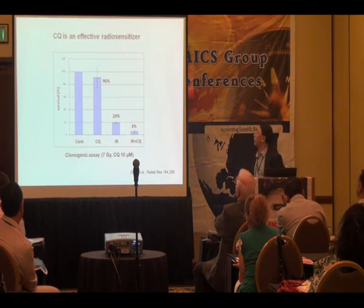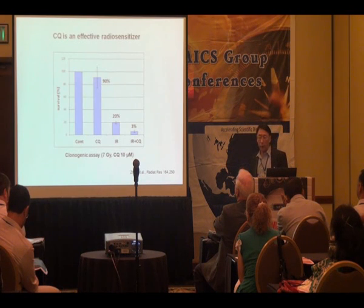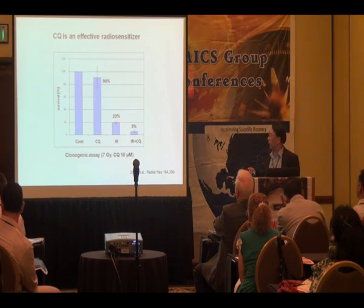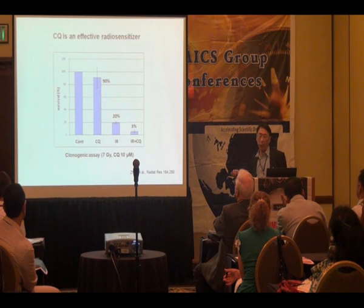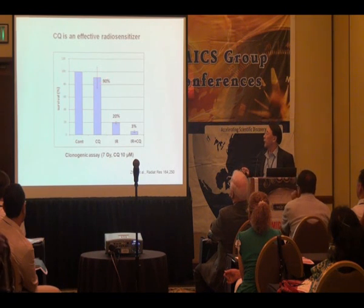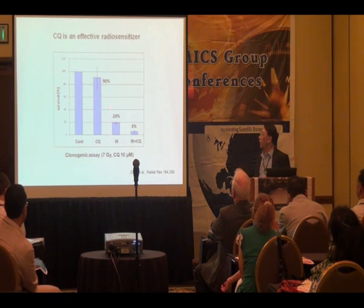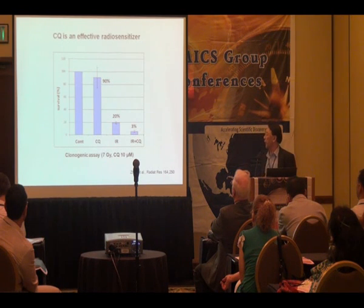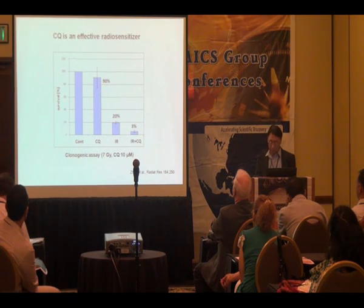Some time ago, we were interested in how we could effectively treat radio-resistant cell lines we had developed. We tested chloroquine — which, as I said, is very inefficient in many ways. In this case, 10 micromolar chloroquine killed about 10% of cells. Irradiation alone at seven gray killed about 80% of cells. But put together, 97% of the cancer cells were killed. This is not a simple additive effect — it's a synergistic effect. So we were excited about this research.